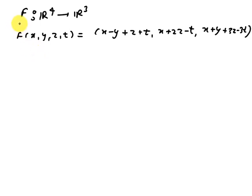Hi, let's start the solution. In this question, we have given a linear mapping F from R4 to R3, and F is X minus Y plus Z plus T, X plus 2Z minus T, X plus Y plus 3Z minus T.